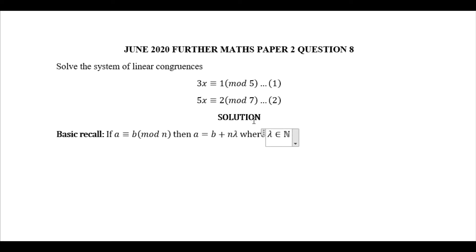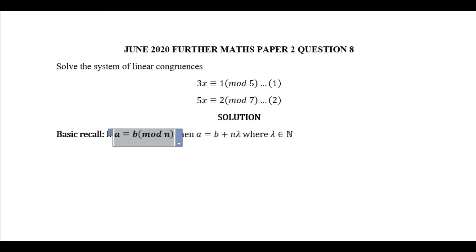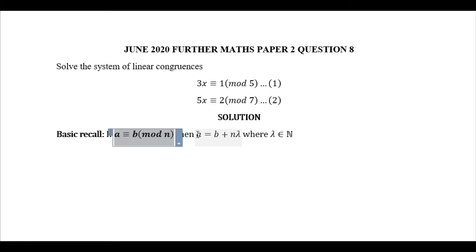This congruence simply means that a is congruent to b mod n — it means that if you take a and divide it by n, the remainder is b. We are going to transform each of these equations to look like this standard form, rewrite it, and then see how to proceed.